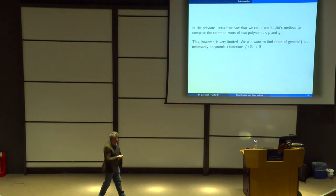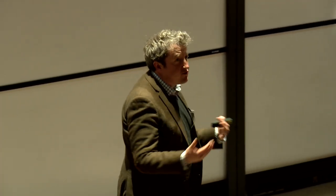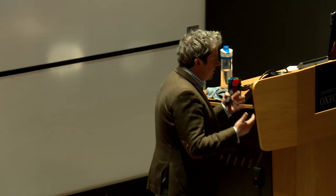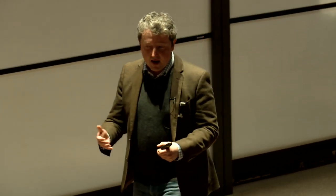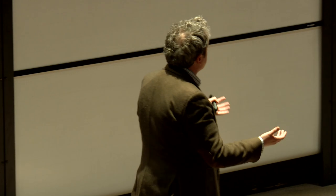In the previous lecture, we saw that we could use Euclid's method for a very limited sense of root finding — if we had two polynomials and wanted to find their common roots, we could calculate their greatest common divisor. But that is extremely limited. Real problems — we want to solve equations far beyond finding the common roots of two polynomials. We want to solve Navier-Stokes equations to predict how well airplanes fly, and Einstein field equations to describe how the universe deforms under general relativity.